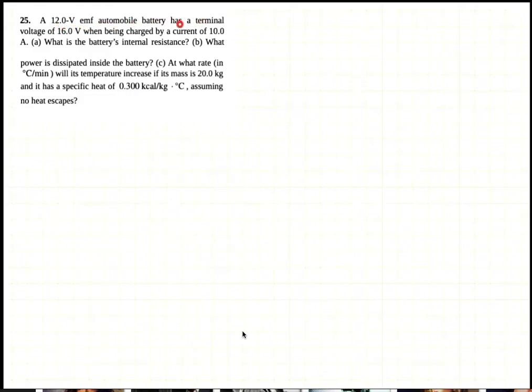A 12 volt EMF automobile battery has a terminal voltage of 16 volts when being charged by a current of 10 amps. What is the battery's internal resistance? So here's the 12 volt battery that is being charged. There's the internal resistance, and it's being charged by an external source with a current of 10 amps.